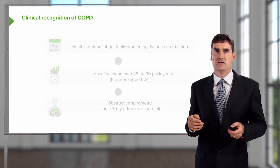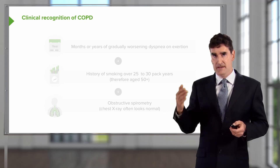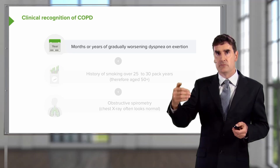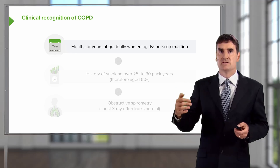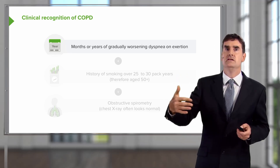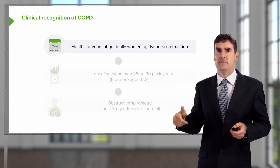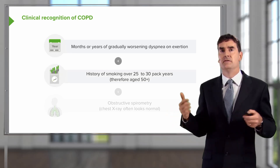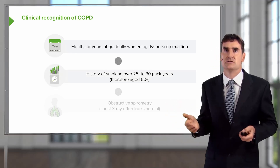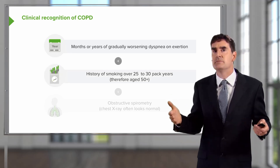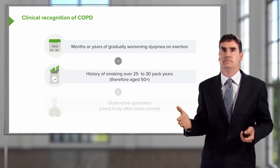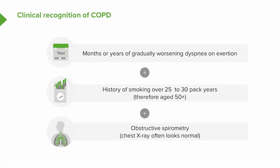How do you recognize patients with COPD? It's a combination of gradually worsening breathlessness on exertion over years or months with a significant pack year history — 25 to 30 pack years. Therefore, most patients would be aged over 50, plus obstructive spirometry.